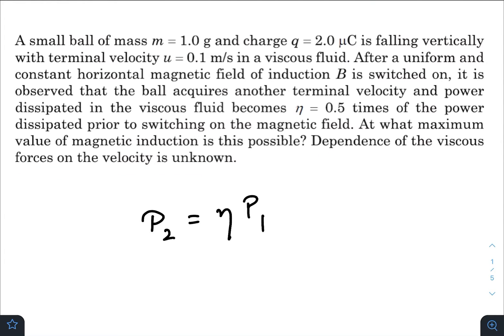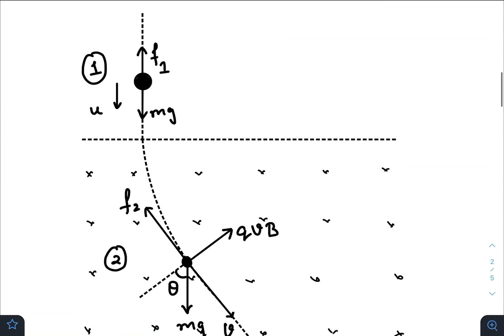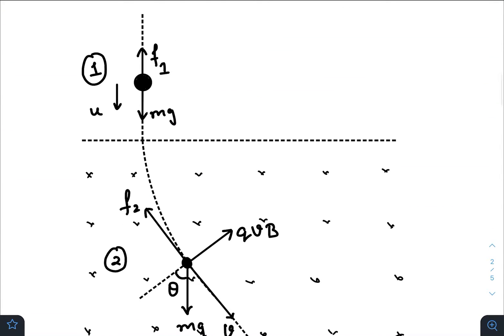So let us first analyze the situation here. I have already drawn the diagram to save you some time. Initially there was a ball of mass m and charge q which was falling with terminal velocity u. That means the net force on the ball was zero.